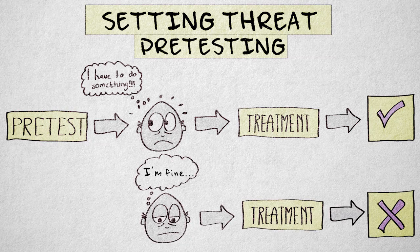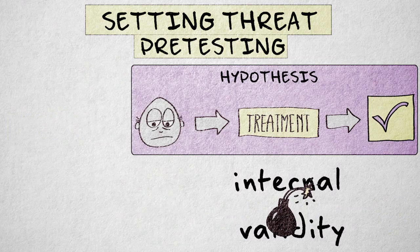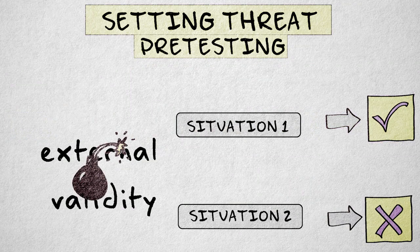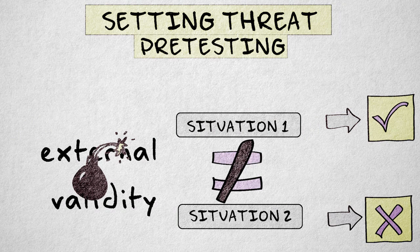In this case, internal validity is threatened because receptiveness is missing from our hypothesis. External validity is also threatened because the hypothesis will only apply to situations where a pre-test is part of the setting.